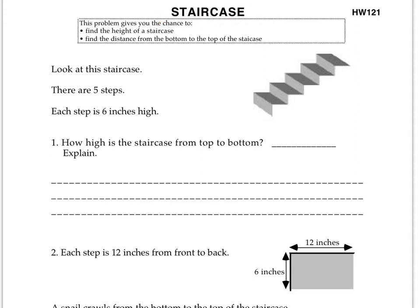Here we are on the other side. We have a staircase problem, and you can see a staircase right here. It says, look at the staircase. There are five steps. Each step is six inches high, so going up is six inches. How high is the staircase from top to bottom? You have to consider how high each step is and add them together. And it says how many steps there are. And then you have to explain how you figured that out.